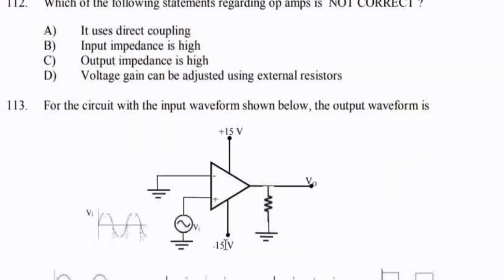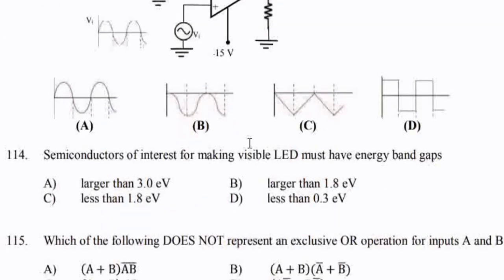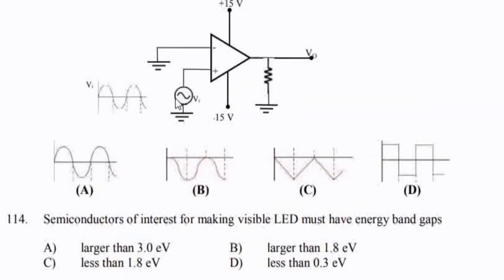For the circuit with the input waveform shown below, the output waveform is — option D.